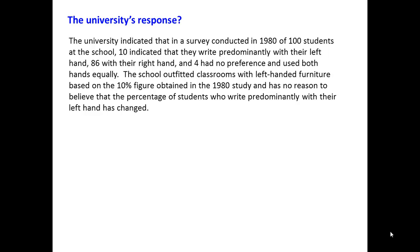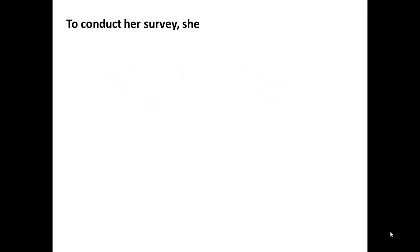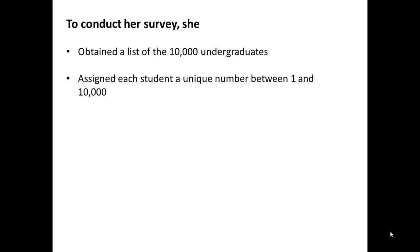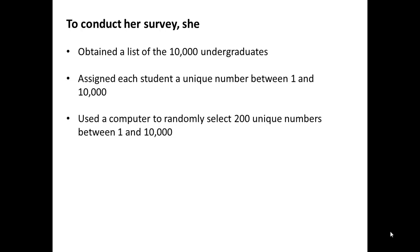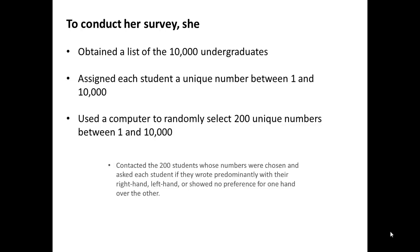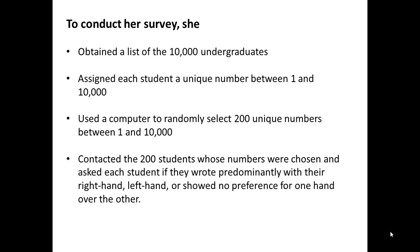Lily felt the 10% figure was much too low and decided to conduct a survey of which hand students at her university used for writing in 2014. She knew that in order to get a representative sample of undergraduate students, she would need to select students randomly. She obtained a list of the 10,000 undergraduates, assigned each student a unique number between 1 and 10,000, used a computer to randomly select 200 unique numbers, and then contacted those 200 students and asked each whether they wrote predominantly with their right hand, left hand, or showed no preference.